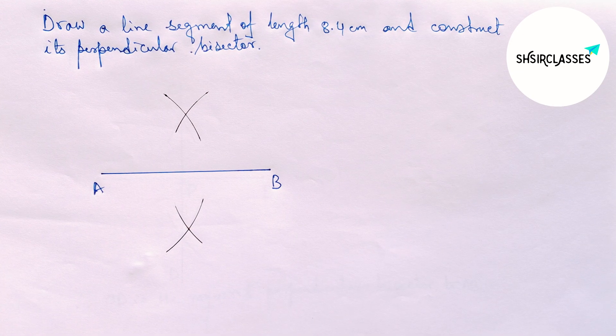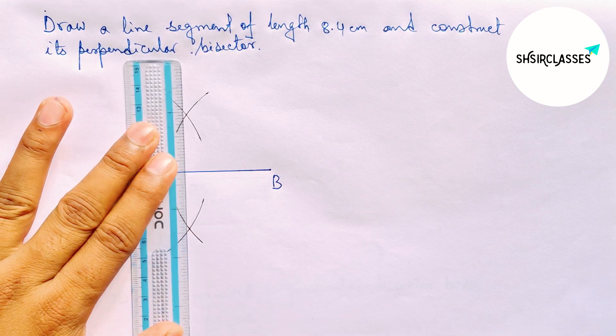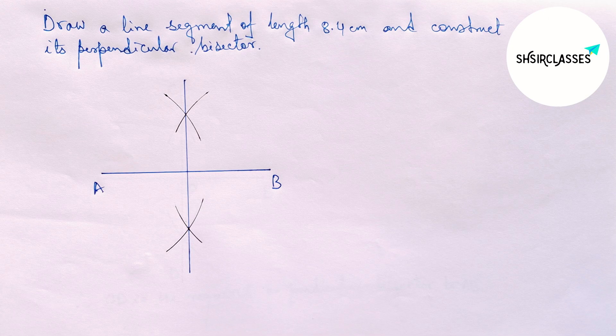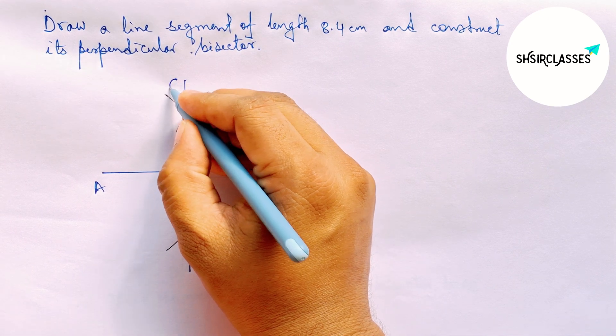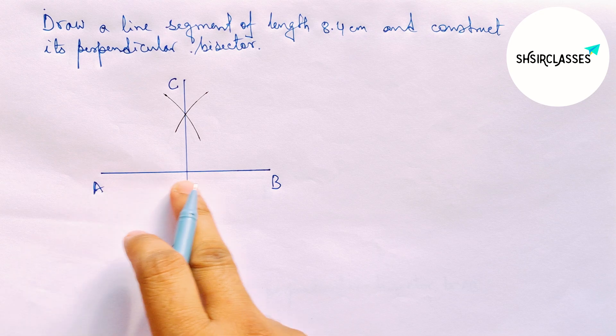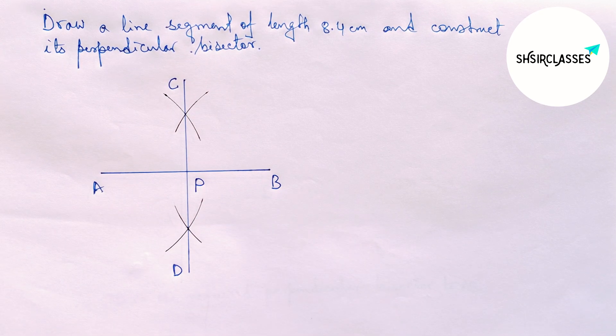Now, joining this and this is the required perpendicular bisector. Labeling here C and D. AB and CD both intersect here at a point.